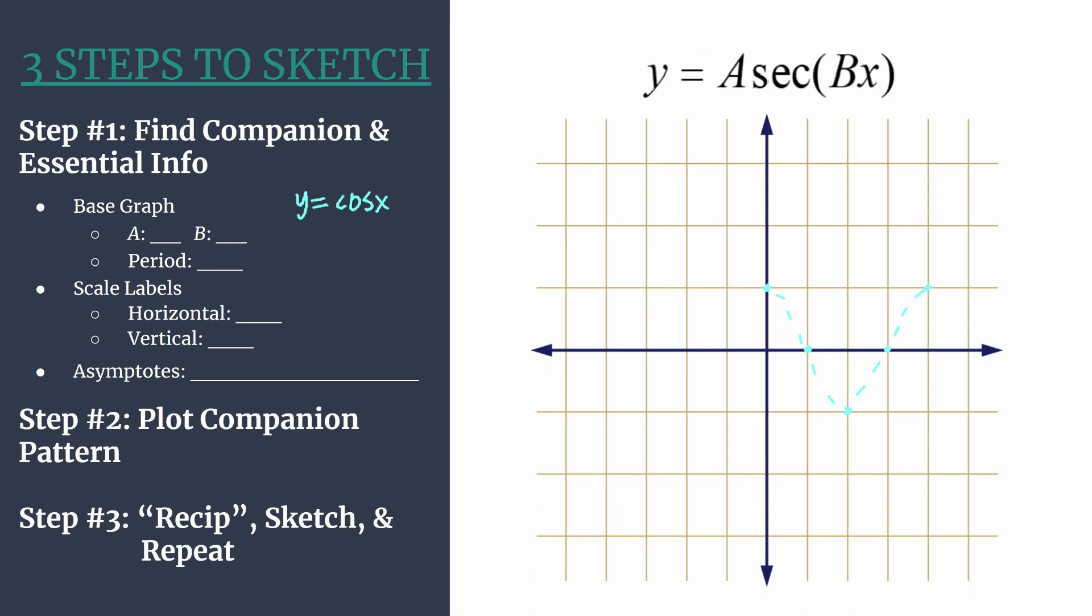So when we complete step three, where we recip, sketch, and repeat, here's what's going to happen. Well, the reciprocal of, let's just use our example in this case, one is just one. Let's take a value in here, say about one half. When you take the reciprocal of one half, you get two. If you try to take the reciprocal of zero, you get something undefined. So that's where we'll have a vertical asymptote.